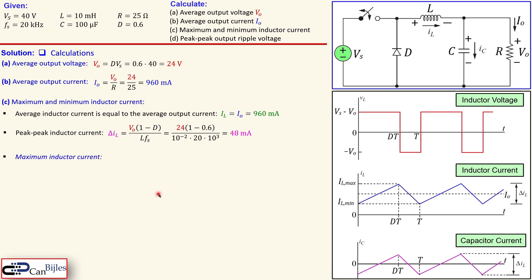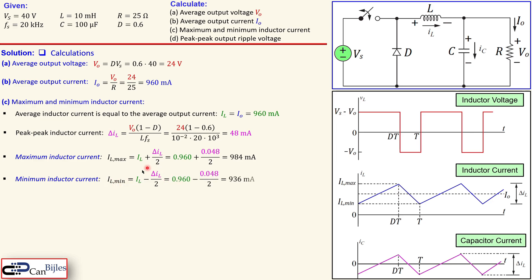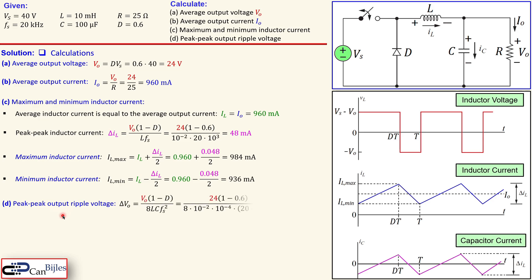The maximum inductor current can then be calculated using the average and the peak-to-peak inductor current. The maximum inductor current equals the average plus the peak-to-peak divided by two, giving 984 milliamps. The minimum inductor current uses a minus instead of plus, giving 936 milliamps. So the peak-to-peak difference is 48 milliamps.